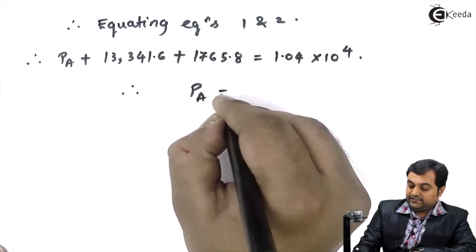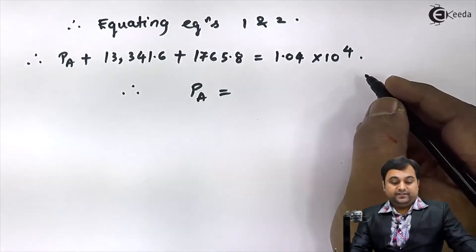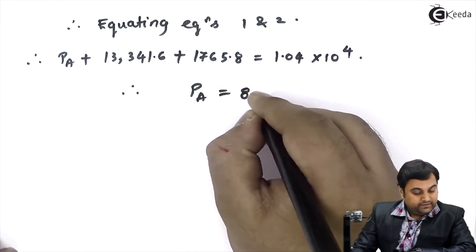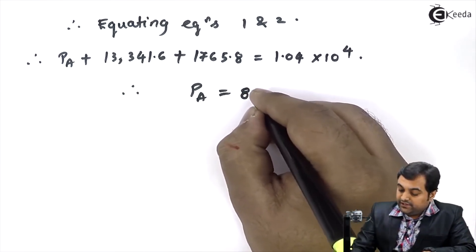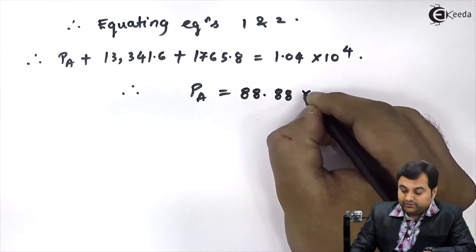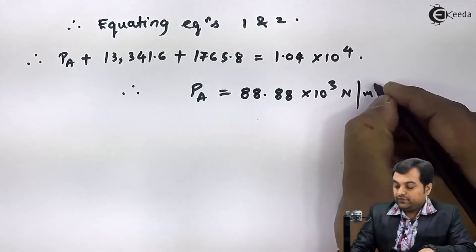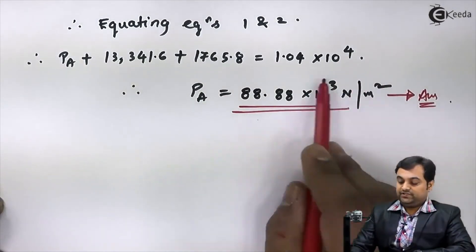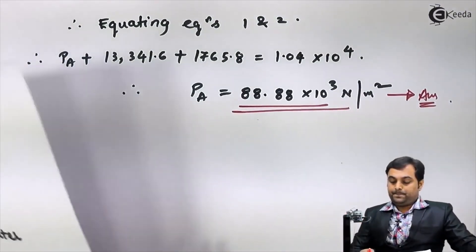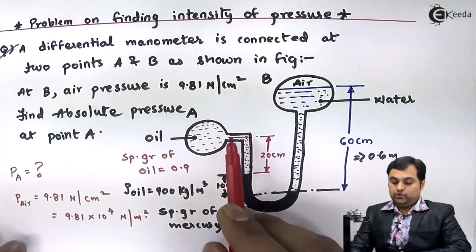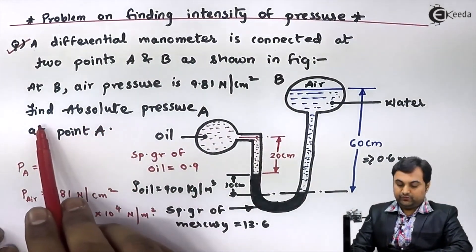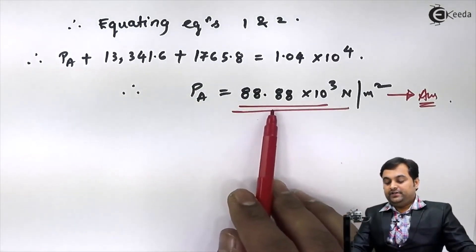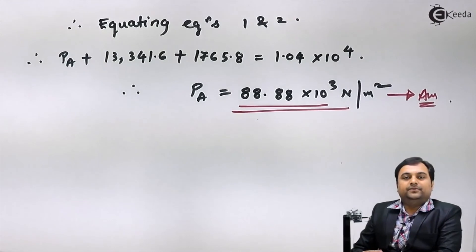Shifting the known terms to the other side (they become negative), the final answer comes out to be P_A = 88.88 × 10³ Newton per meter square. This is the answer — this much pressure exists in pipeline A. The absolute pressure at point A is the pressure of oil, and that is 88.88 × 10³ N/m².